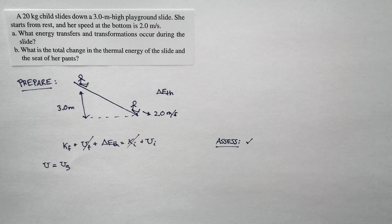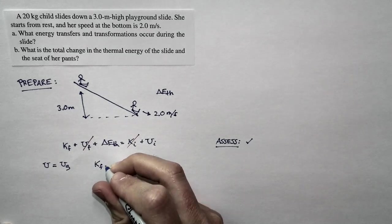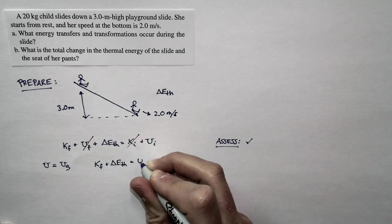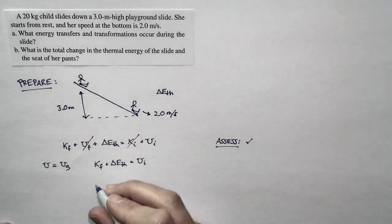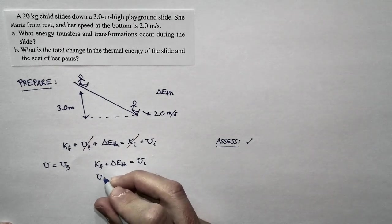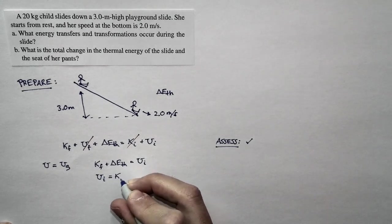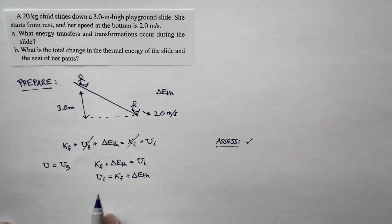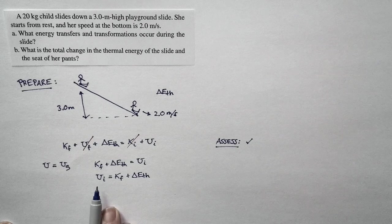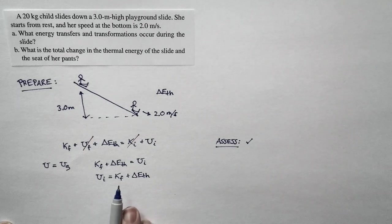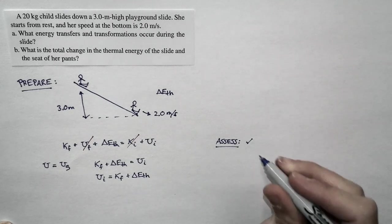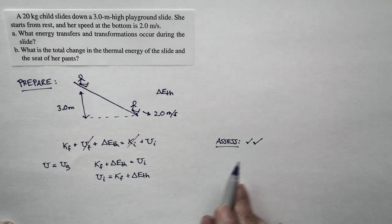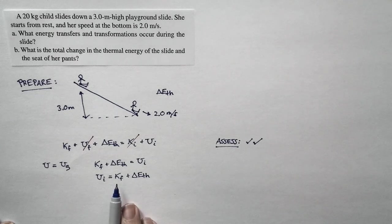As a result, we end up with a very straightforward equation. The final kinetic energy plus the change in thermal energy is equal to her initial potential energy. And this makes sense because we said her potential energy turns into kinetic energy and thermal energy. In terms of our understanding about the way the problem is going, our equation makes sense.